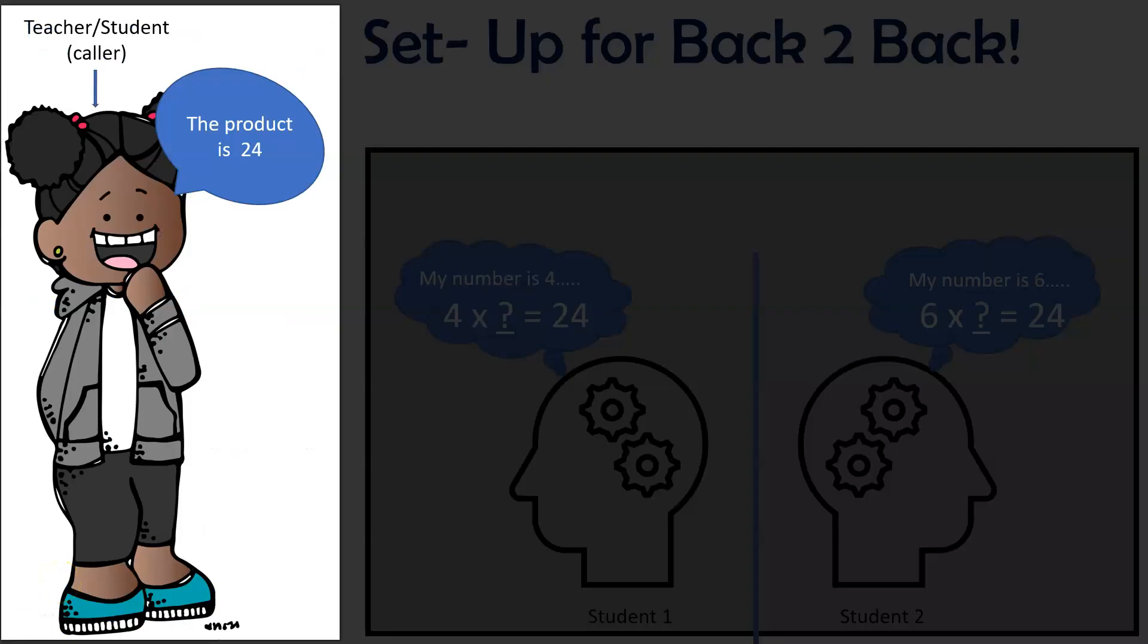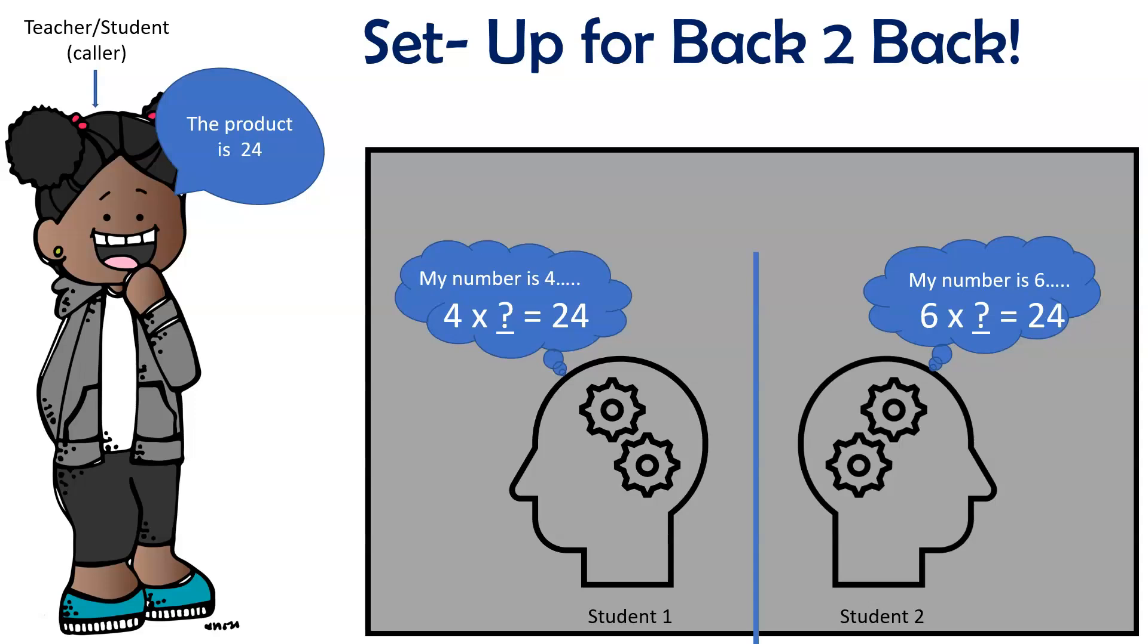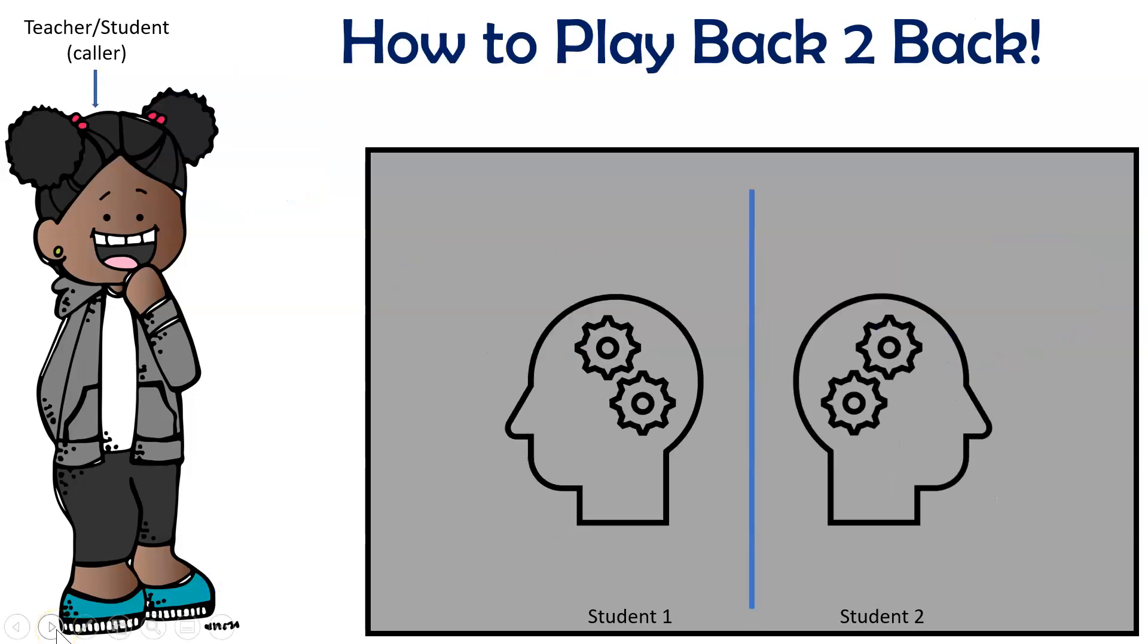To play Back to Back, you will need a teacher or student to serve as a caller and two players that will stand in front of the class board with their backs to each other. They don't need to be touching. In fact, you can have them several feet from each other just as long as their backs are facing each other and instruct them not to turn around. Each player will need a dry erase marker and eraser to write their numbers on the board. The objective of the game Back to Back is to be the first player to guess the other player's number.